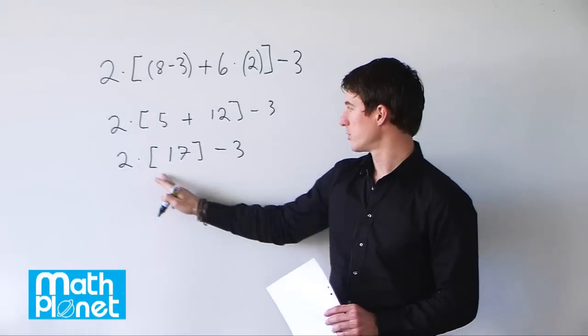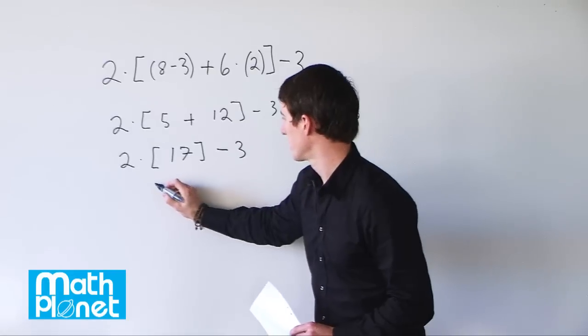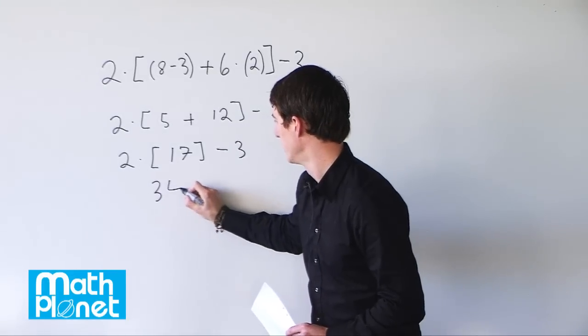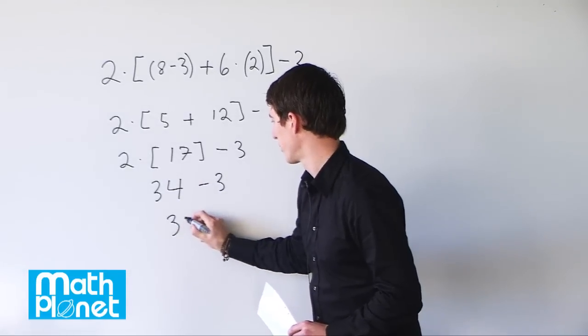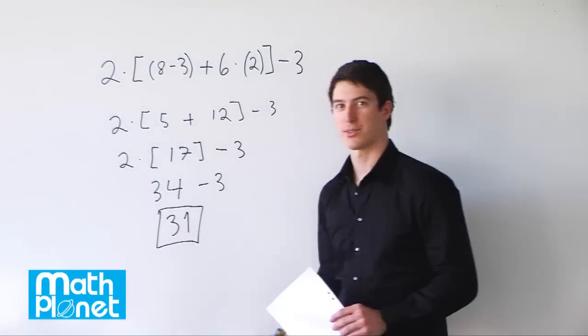Now finally we can do 2 times 17. 2 times 17 becomes 34, and 34 minus 3 is just 31. And there's our final answer.